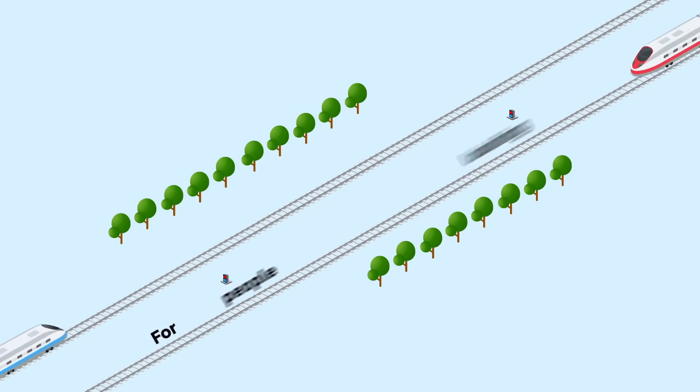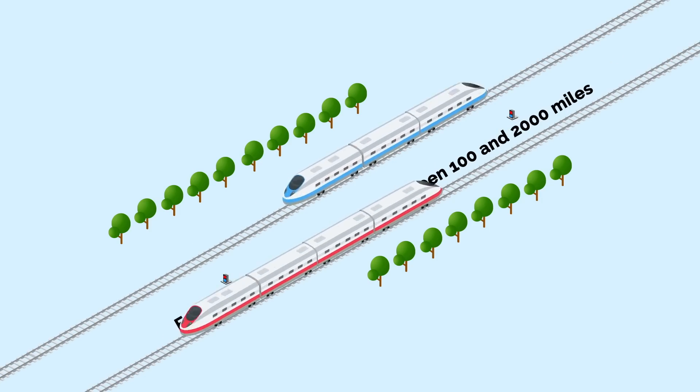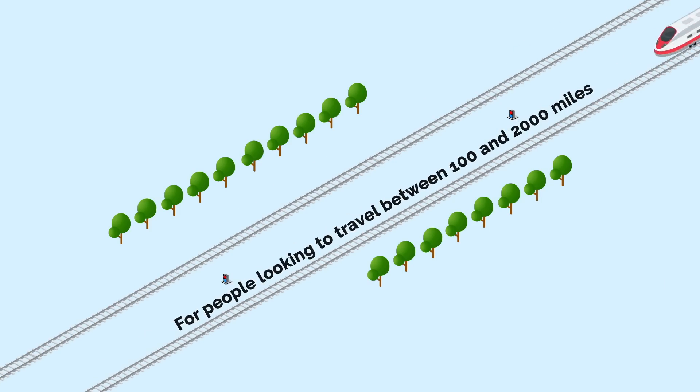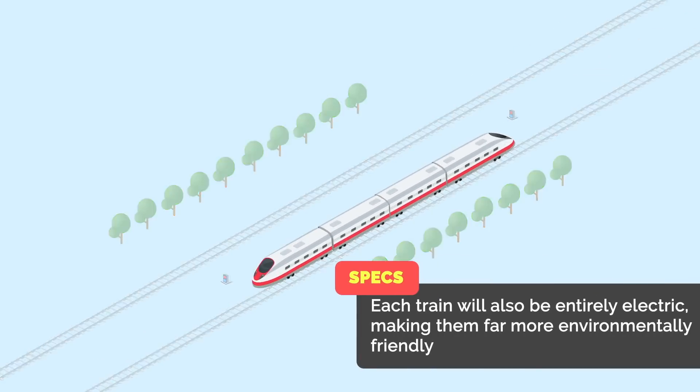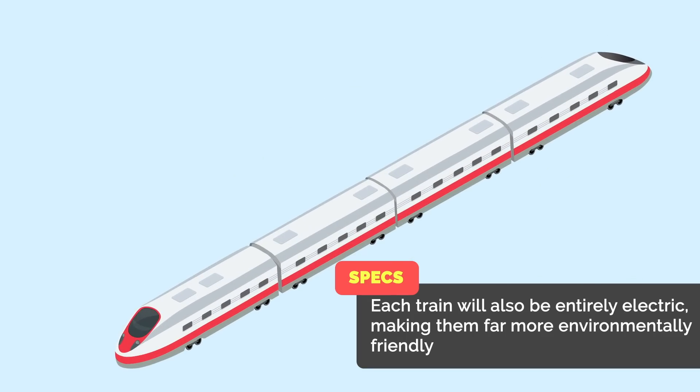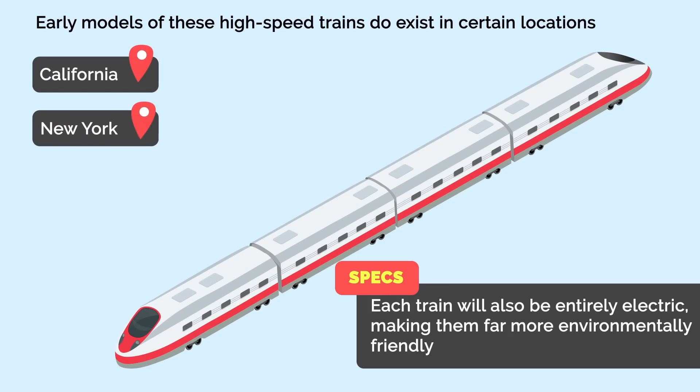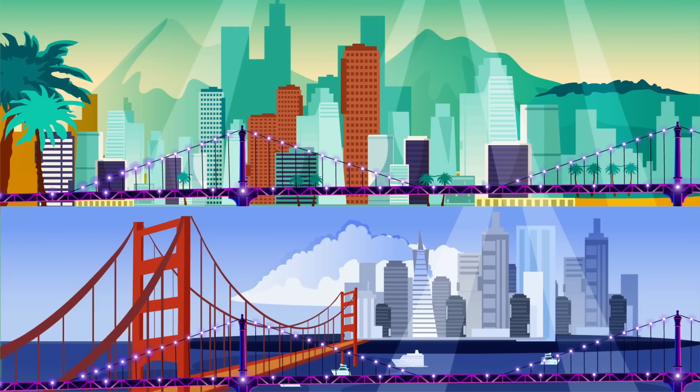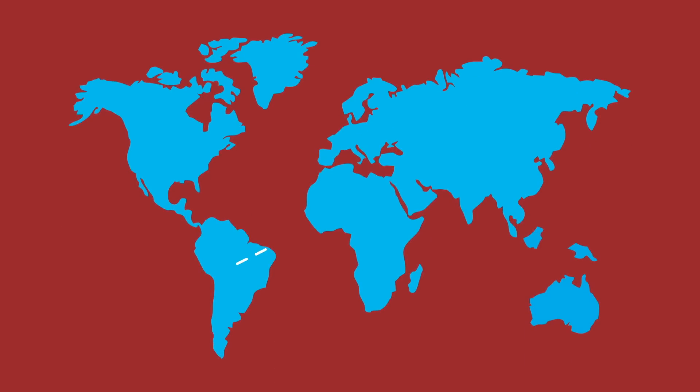Each train will also be entirely electric, making them far more environmentally friendly. Early models of these high-speed trains do exist in certain locations, like California and New York. You can already travel from Los Angeles to San Francisco in just a few hours without ever having to step foot in an airport. And if all goes as planned, the Rail Association will have connected every major city within the next decade.